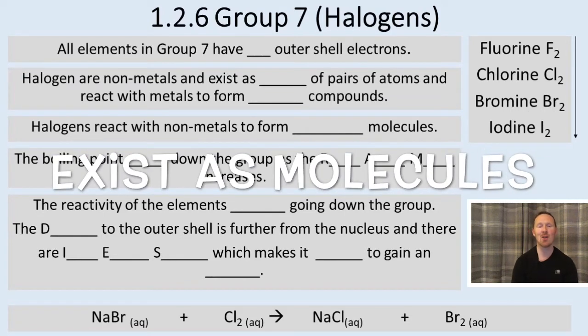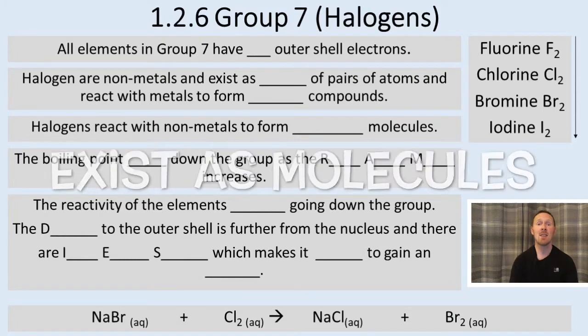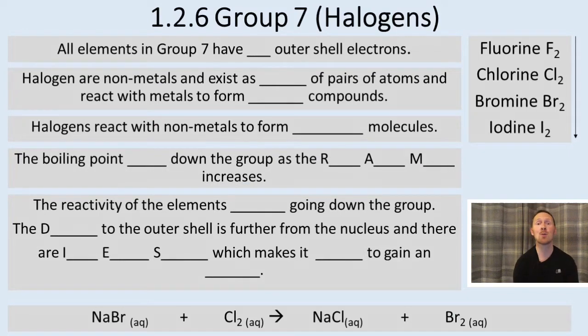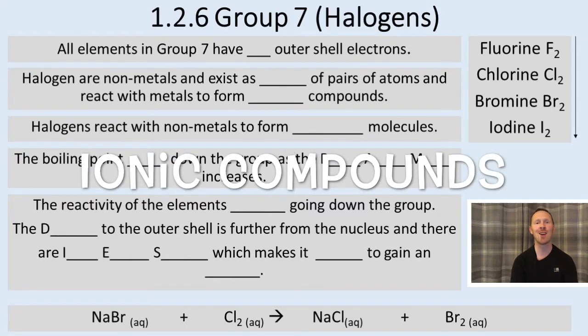Halogens are non-metals and exist as molecules of pairs of atoms. They form ionic bonds when they react with metal atoms. For instance, sodium and chlorine react together to make sodium chloride, which is an ionic compound.